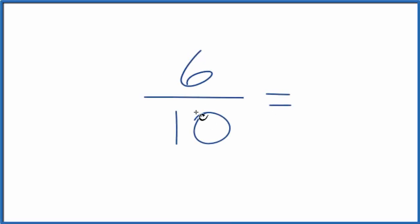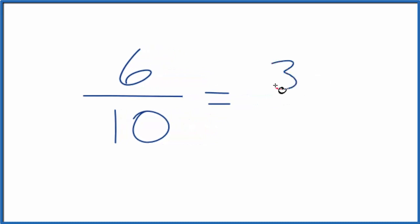If you're asked to write six-tenths, the fraction 6/10, as a decimal, here's how you do it. First off, we could simplify this. We could divide 6 by 2, that would give us 3, and divide 10 by 2, that gives us 5.